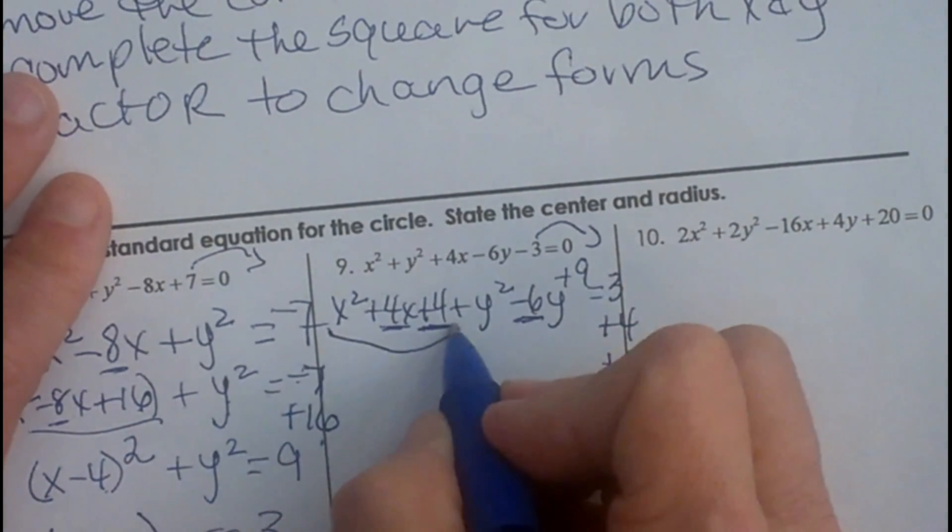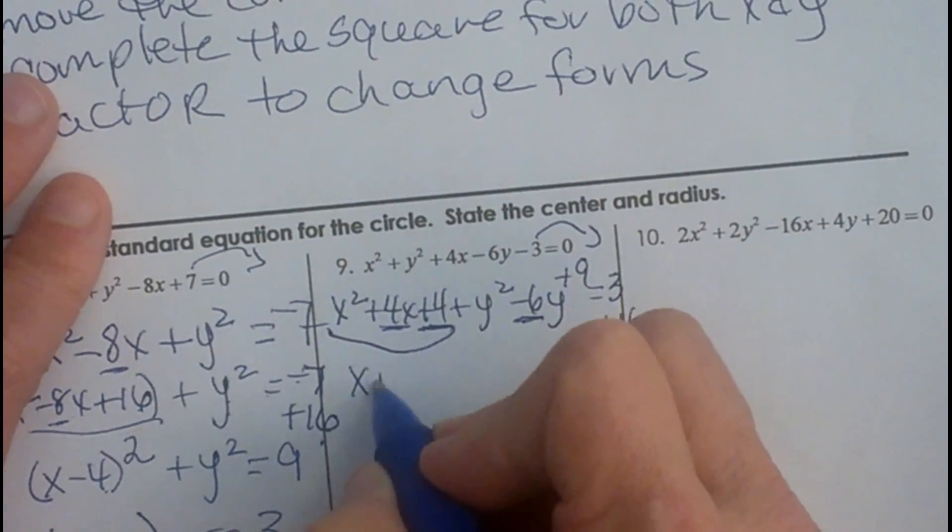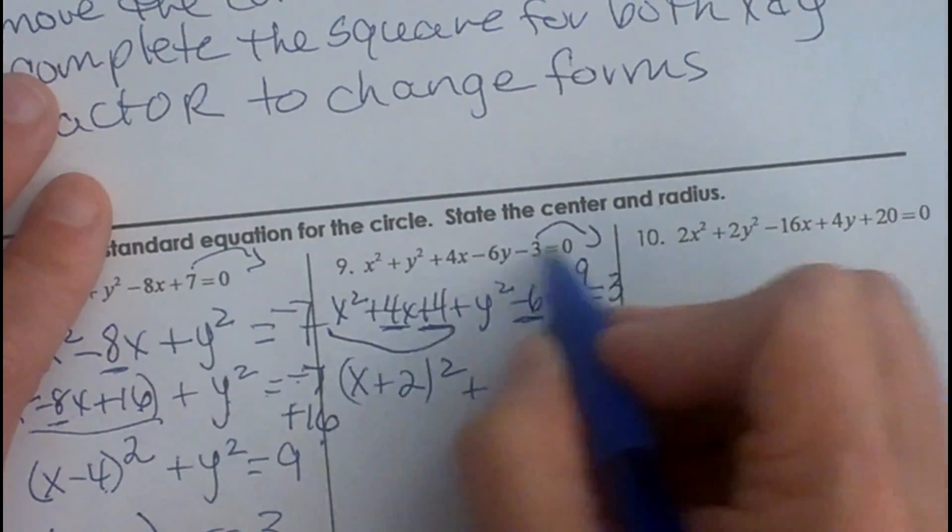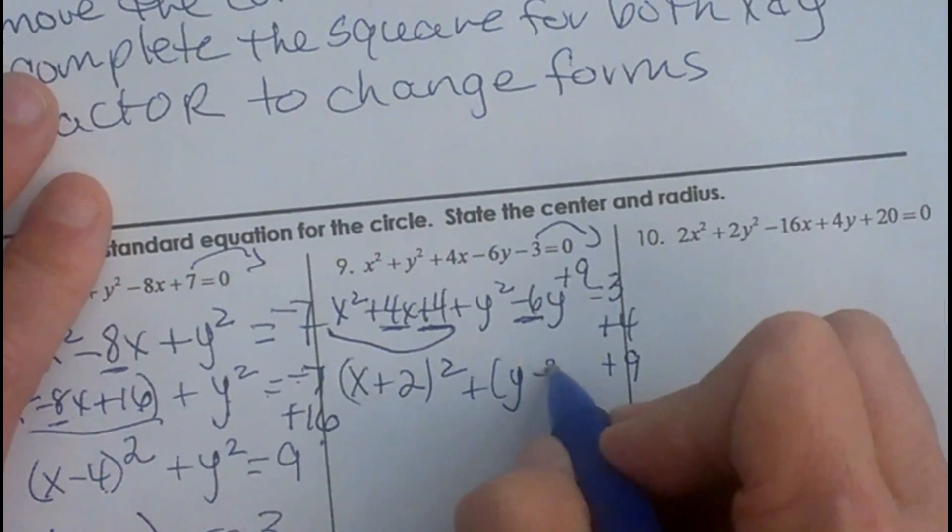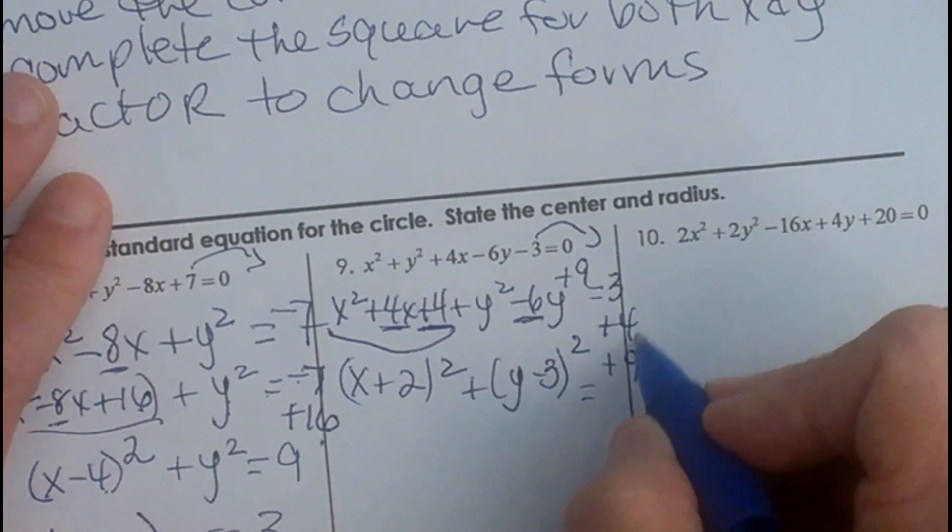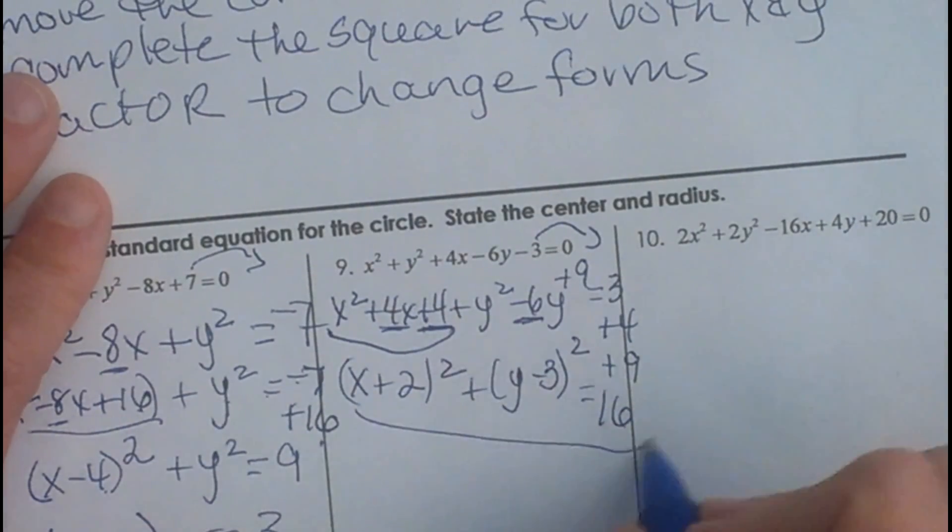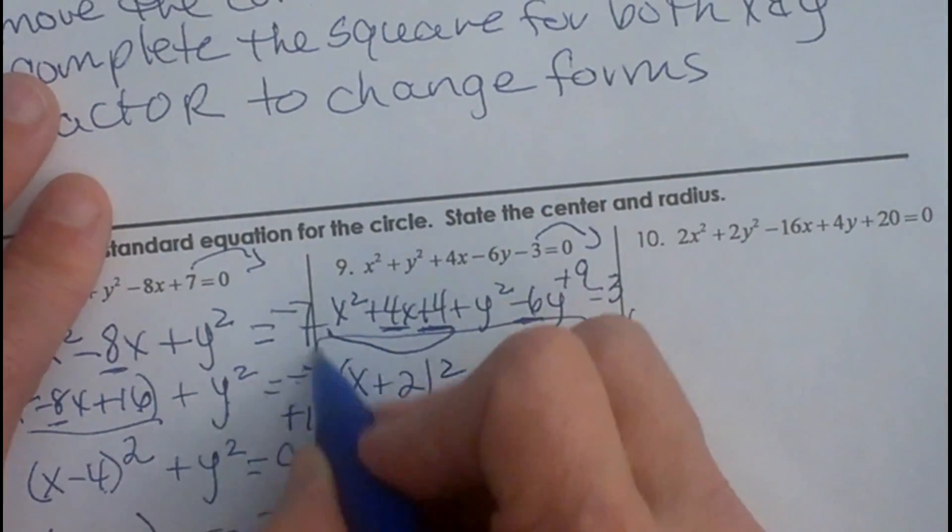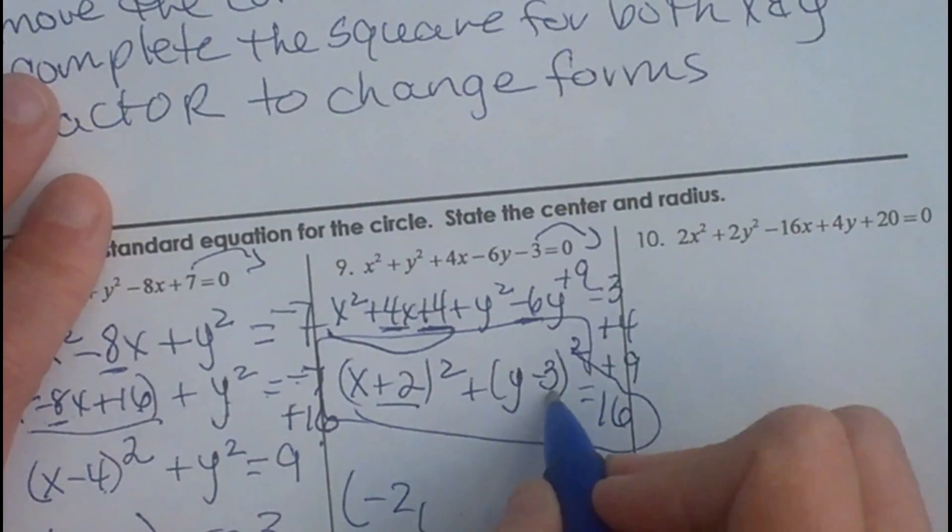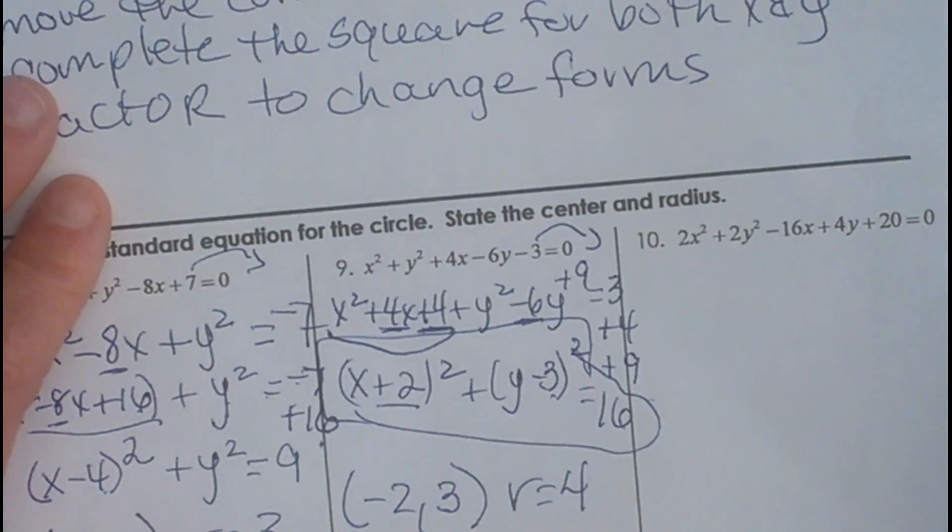Now I can take my x part and what I just did was complete the square and it is going to be x plus 2 quantity squared plus y minus 3 quantity squared equals 9 plus 7 is 16. So now I can pull out, you can see I have now got this in standard form so my center is negative 2 and positive 3 and my radius is 4.